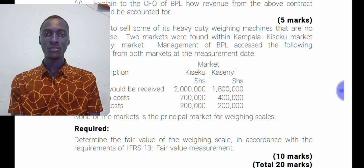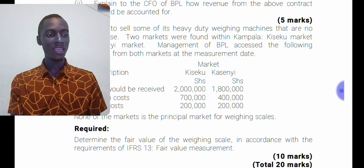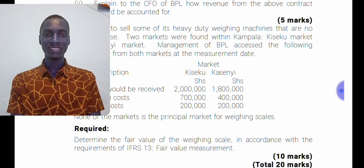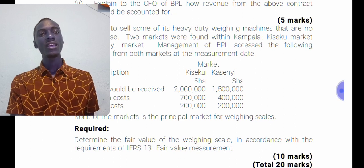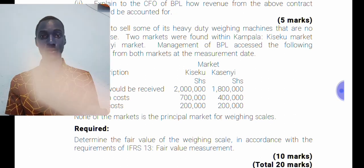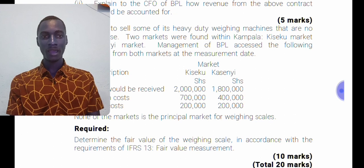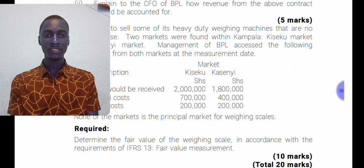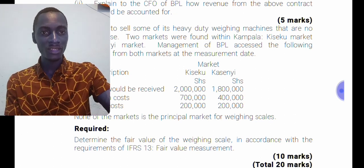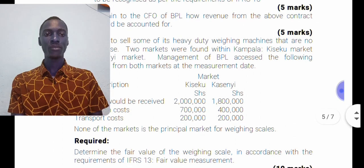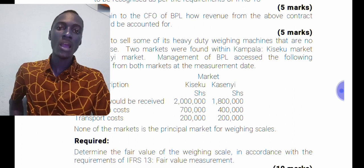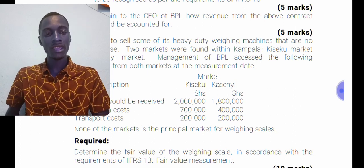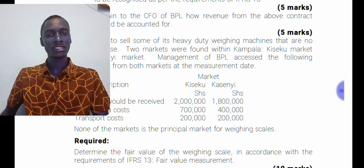The definition of fair value emphasizes that fair value is a market-based measurement, not an entity-specific measurement. Looking at the question, they refer to two markets — the Seeku Market and the Kasini Market — and state that none of the markets is the principal market for the weighing scale.